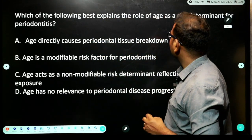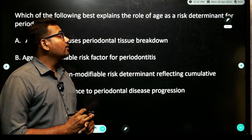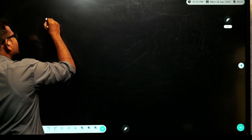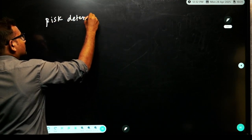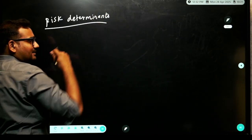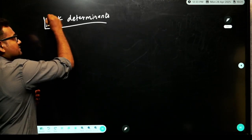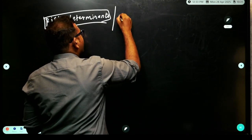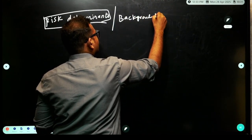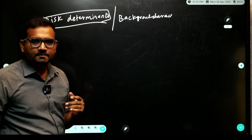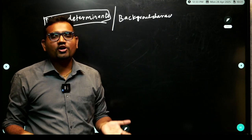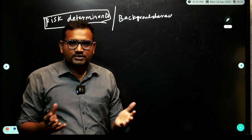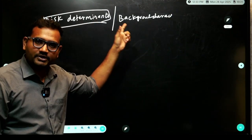Which of the following best explains the role of age as a risk determinant for periodontitis? Let me tell you what risk determinants are. Risk determinants means it is already determined, already created, already made — these are background characteristics. I cannot modify them.